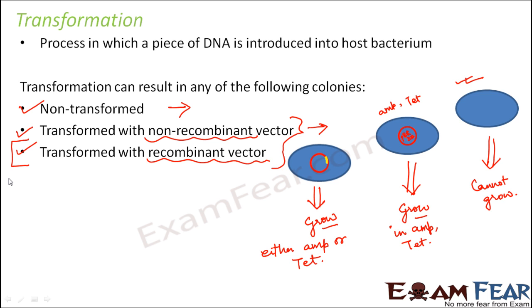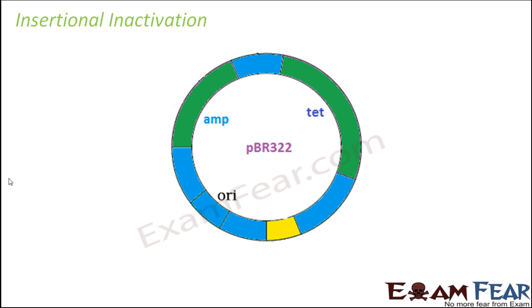Now we will talk about a topic related to selectable markers called insertional inactivation. The concept is straightforward if you have understood selectable markers. We will understand insertional inactivation by taking the example of a specific restriction endonuclease enzyme, using the cloning vector PBR322. PBR322 has its origin of replication, antibiotic-resistant genes against ampicillin and tetracycline, and restriction sites for different restriction enzymes like BamHI, EcoRI, PvuII, PstI, and PvuI.